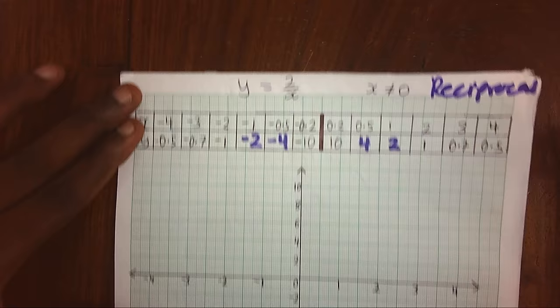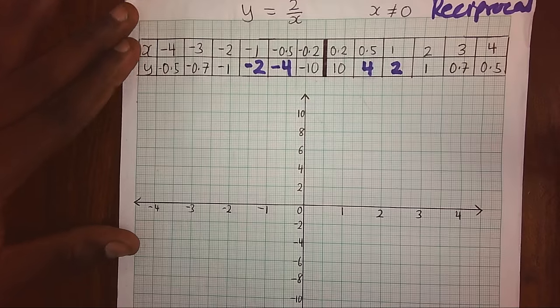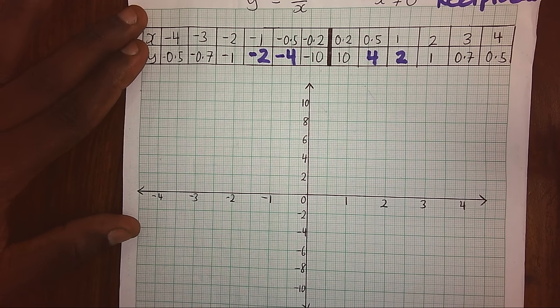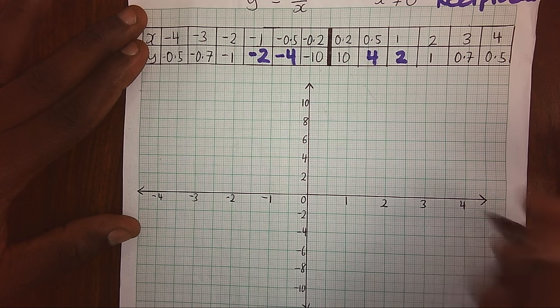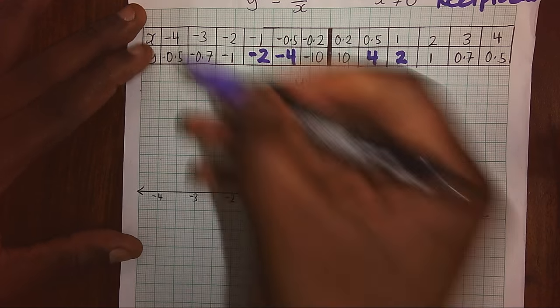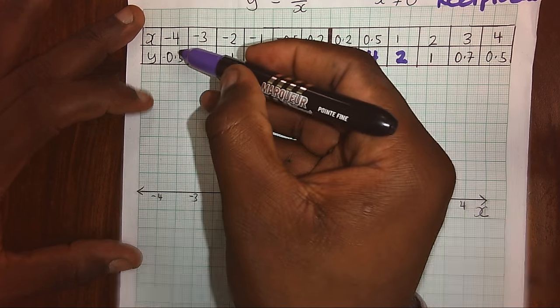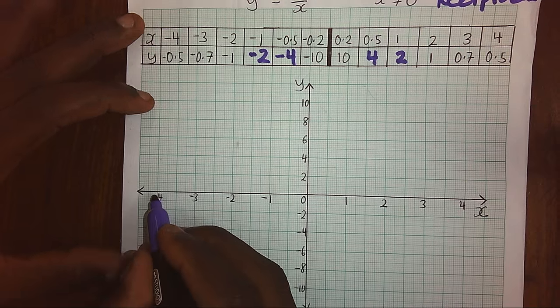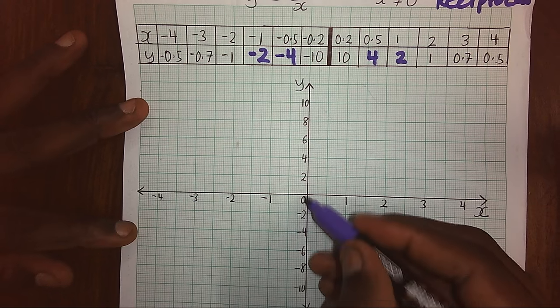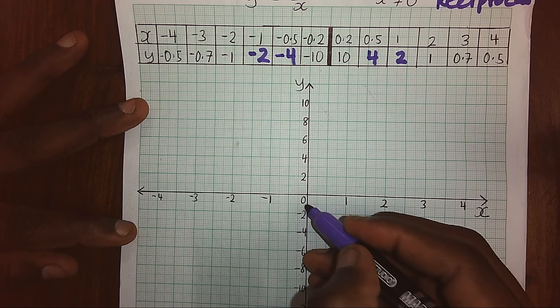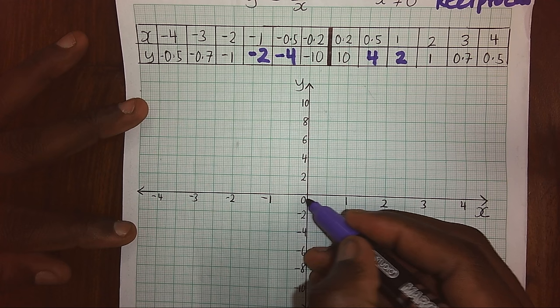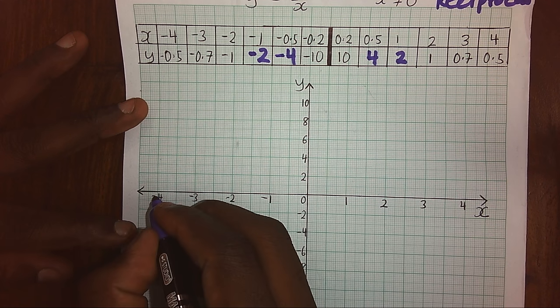After finding the values, we have to plot the points. You have to be very keen on your scale, because if you mess up the scale, then your graph will not come correct. Let's start with the first value. At x equals negative 4, we have to go down to y equals negative 0.5. My scale is 1 centimeter represents 2 units. Negative 0.5 will be somewhere here, so I will place my point there.